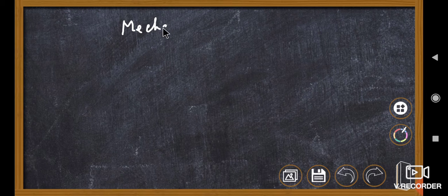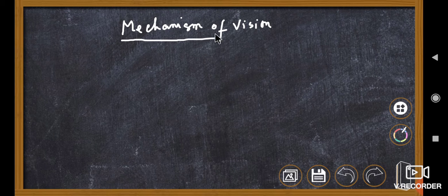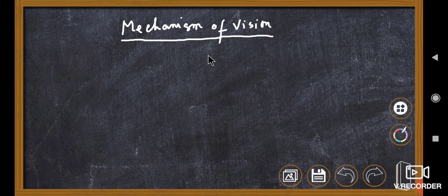Hello and welcome. In the earlier video we discussed the structure and the different parts of the eye along with their function. Today we are going to talk about the mechanism behind vision — that is, how we are able to see the world around us with the help of eyes. We are going to look at what is the mechanism behind producing an image, or the mechanism of vision.